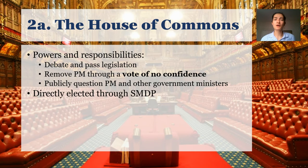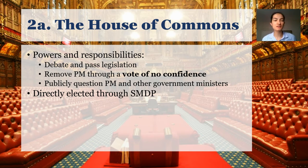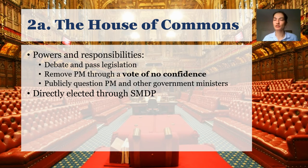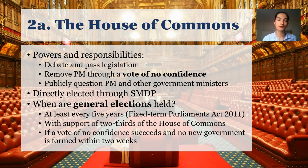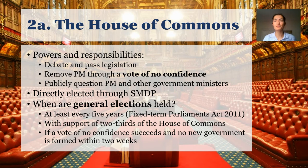Members of the House of Commons are directly elected through single-member district plurality. There are 650 constituencies — geographical units — each with one member of parliament. Generally speaking, all members of parliament are elected at the same time in an event known as a general election. There have been some changes in the last 10 to 15 years around the rules surrounding general elections, so it's worth spending a little time on this.